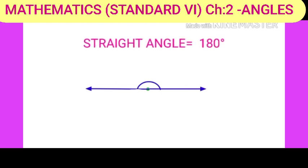When an angle is in the straight line, its measurement is 180 degrees. It is said to be Straight Angle.